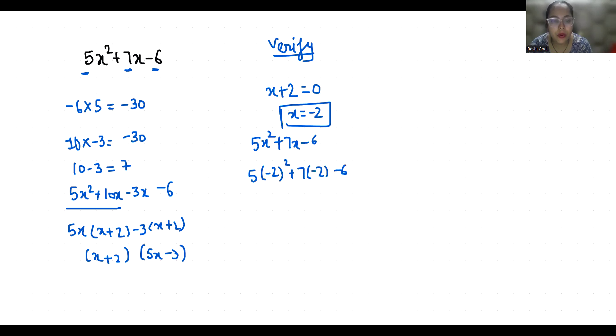5 times 4 plus minus 14 minus 6. So 20 minus 14 minus 6. So 6 minus 6, that is 0.